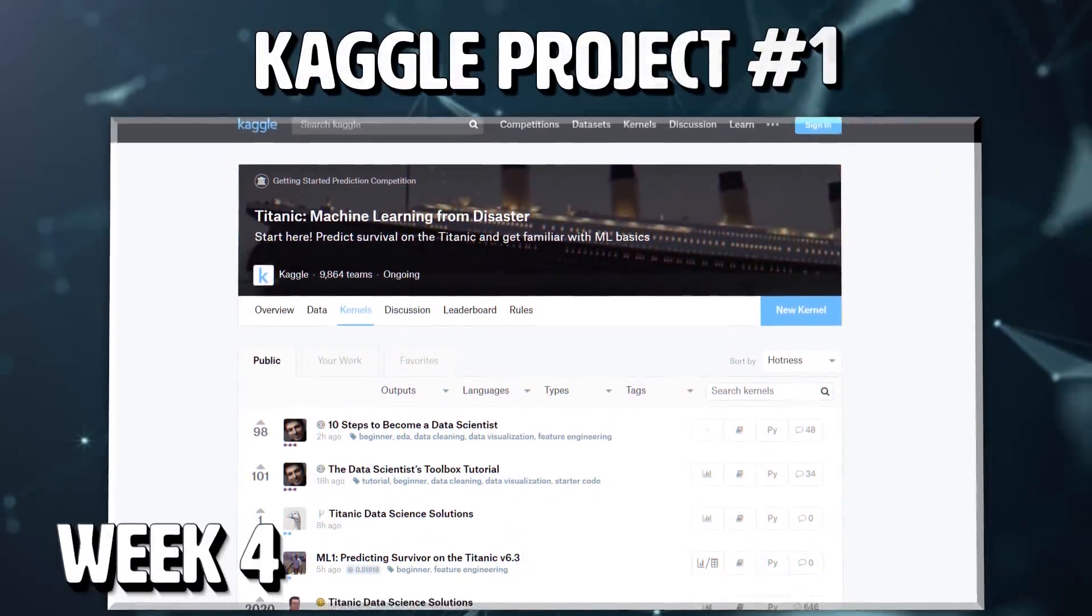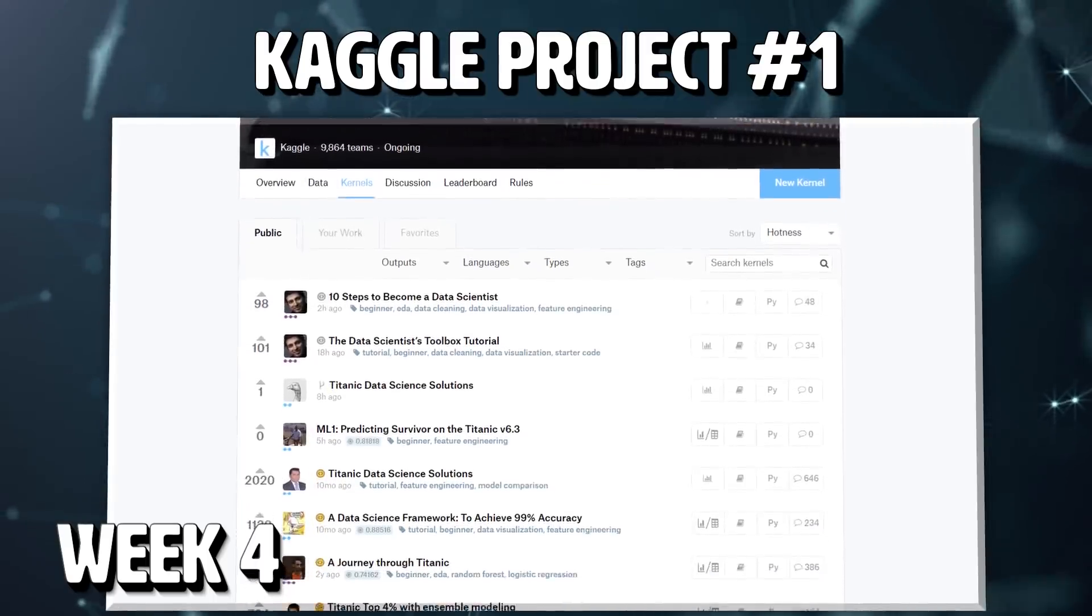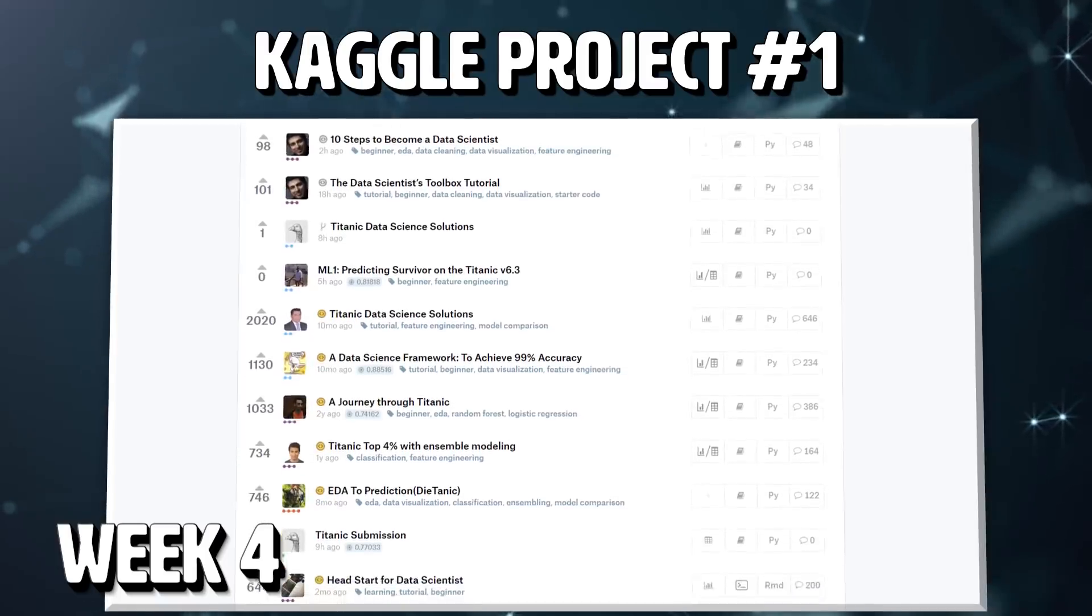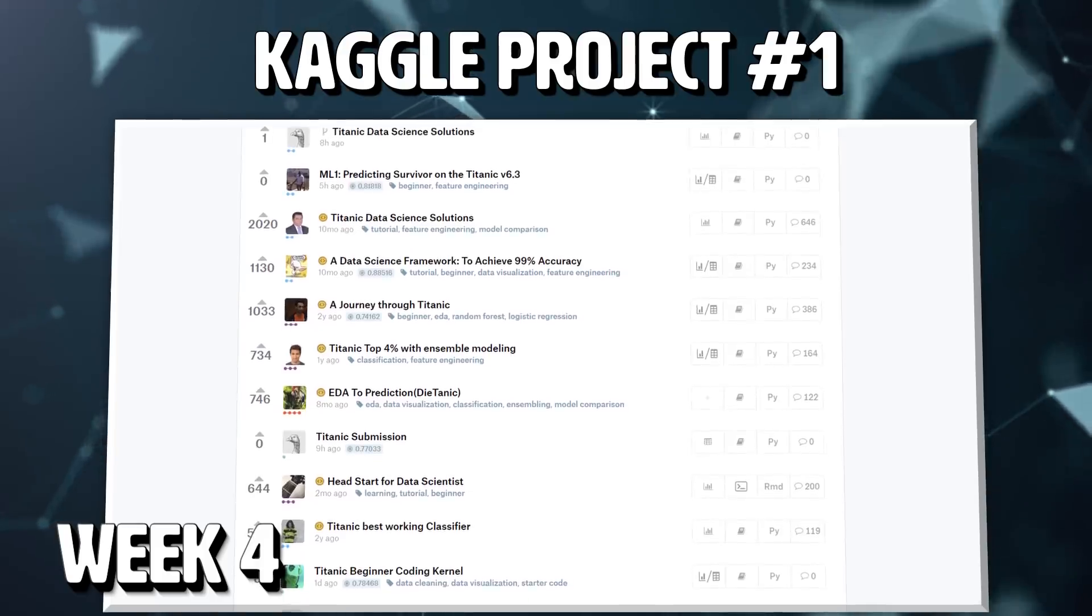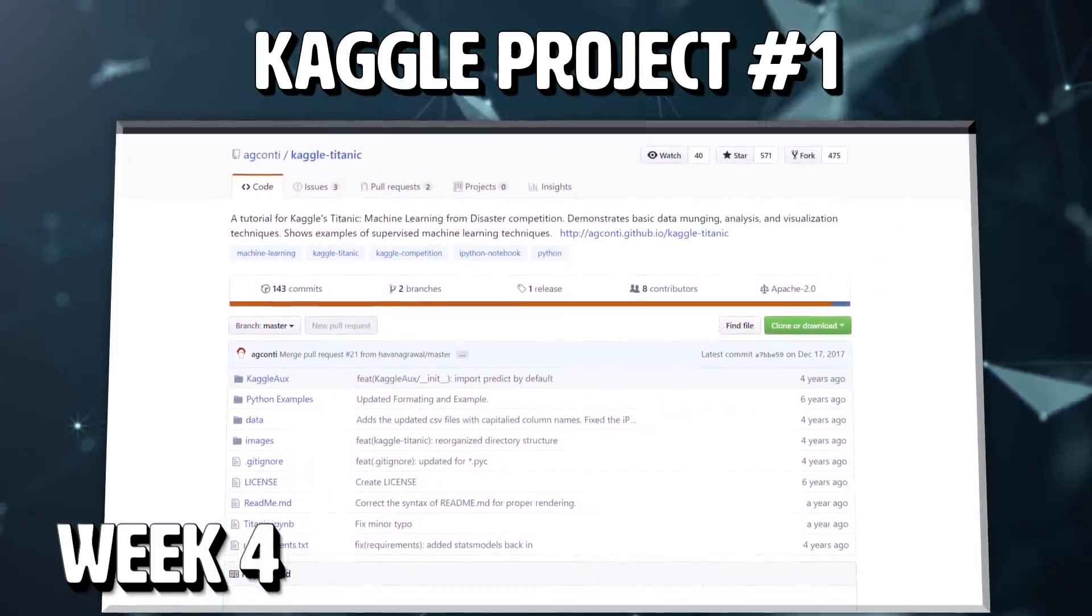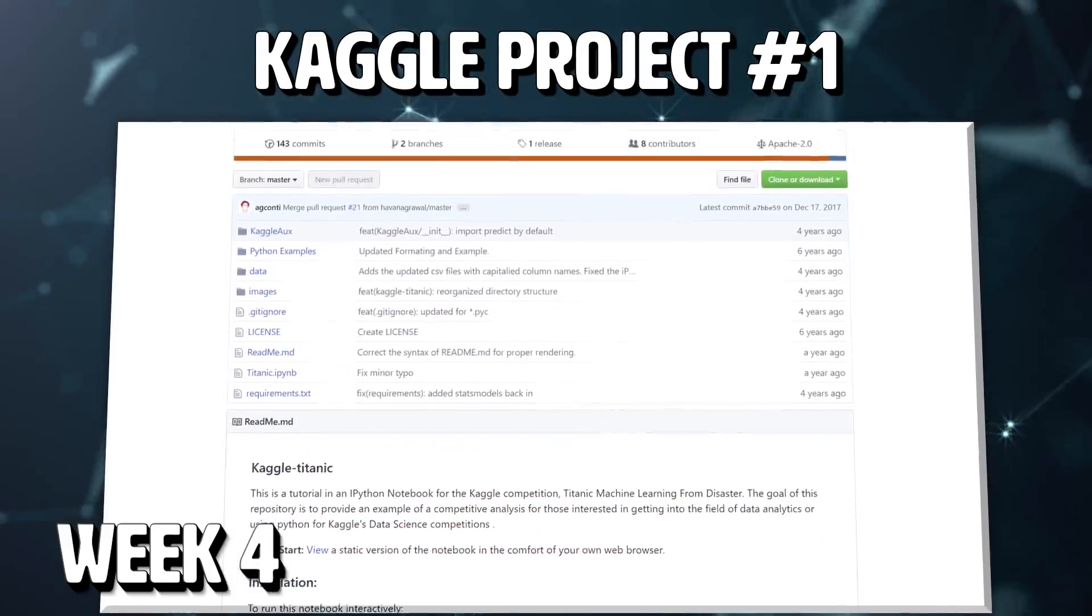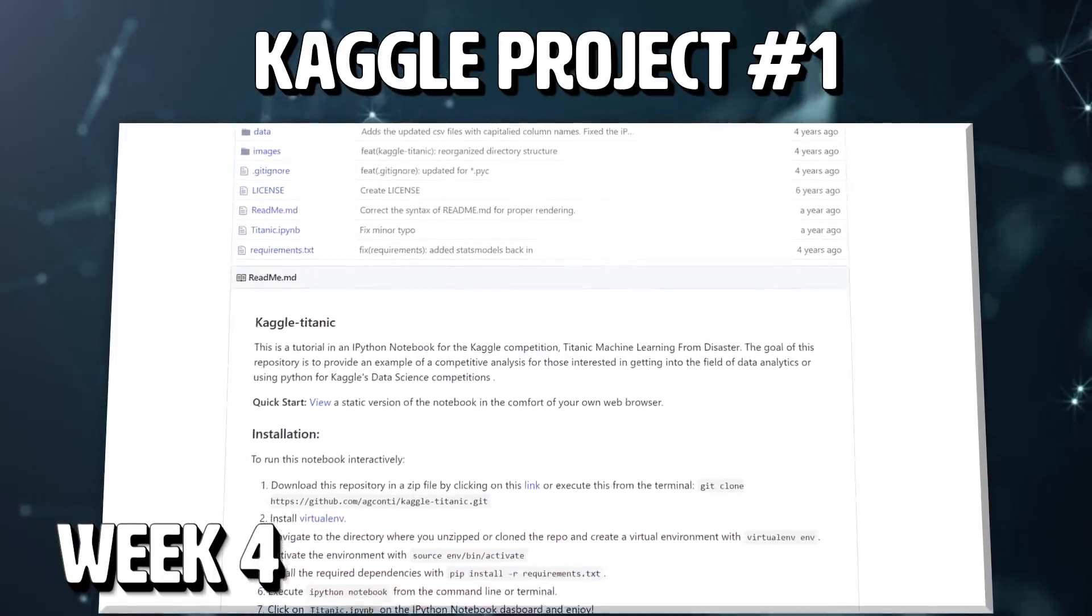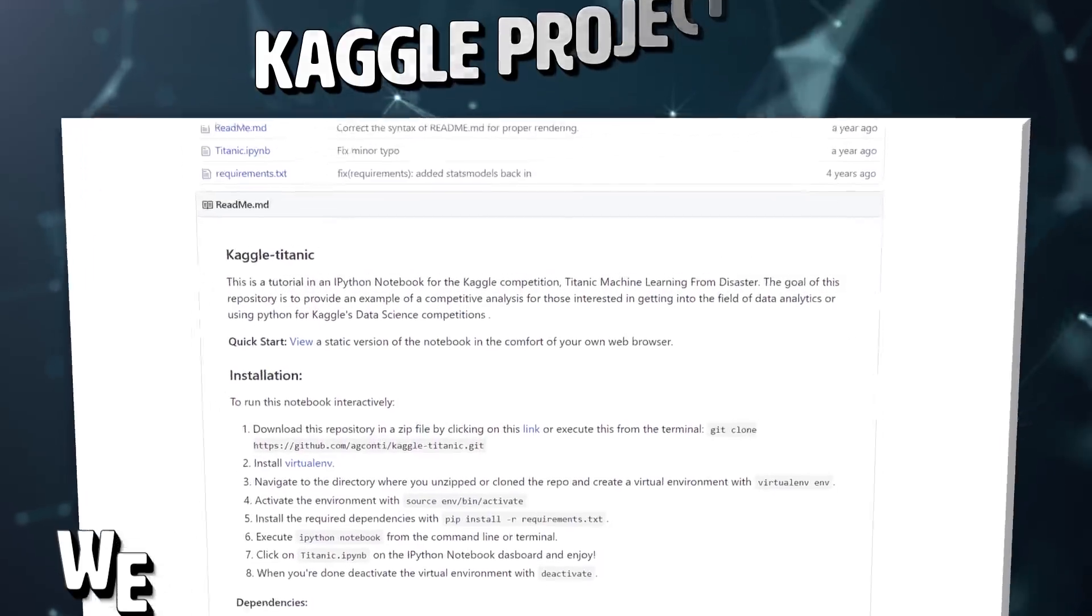For week four, spend the week solving a Kaggle competition that you personally find interesting. That's the best way to stay motivated. Pick a completed competition and briefly view one of the kernels to get some sense of what people have done before. Then create your own repository and get to work. Document the project very well on your GitHub profile so that anyone who views it can run the code if they follow your instructions, including any future employers. Remember, GitHub is the new resume.